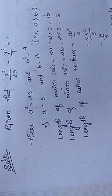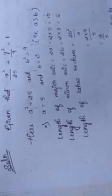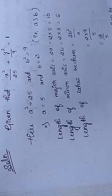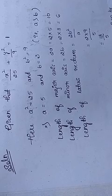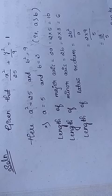The length of the major axis is 2a = 2 × 5 = 10, and the length of the minor axis is 2b = 2 × 3 = 6. The length of the latus rectum is 2b²/a = 2 × 9 / 5 = 18/5.